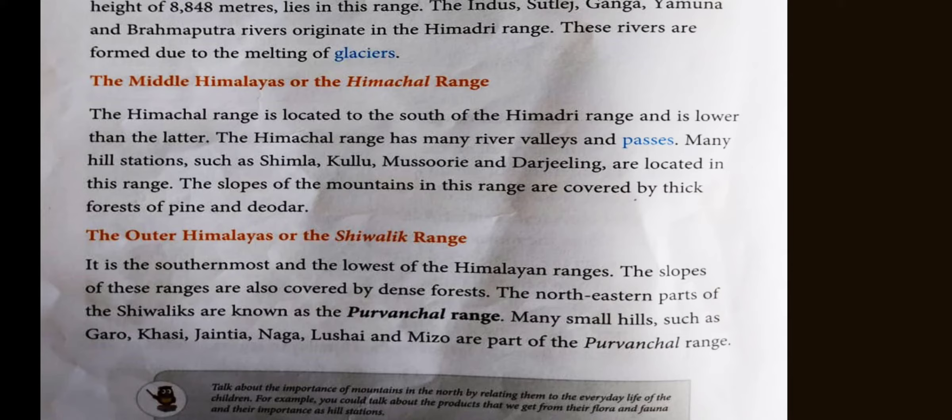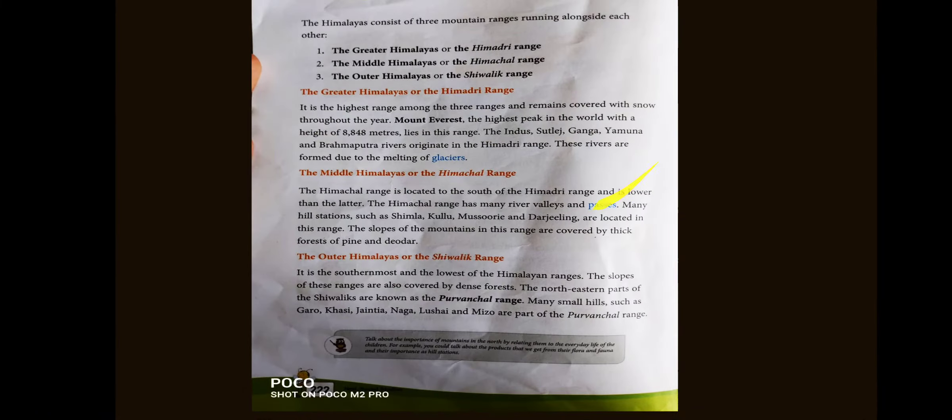The Purwanchal Range has small hills, such as Garo, Khasi, Jaintia, Naga, Lushai, and Mizo — these all belong to the Purwanchal range.